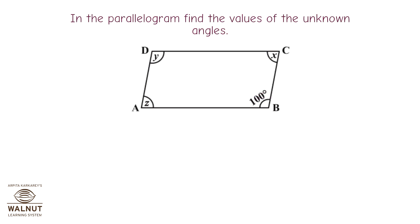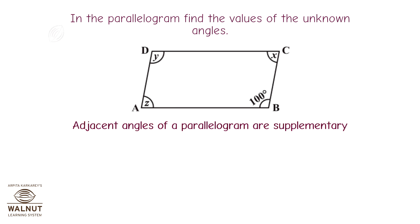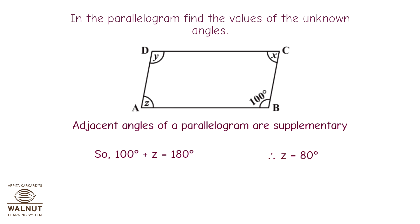In the parallelogram, find the values of the unknown angles. Adjacent angles of a parallelogram are supplementary. So 100° + Z = 180°, therefore Z = 80°. Opposite angles of a parallelogram are congruent.